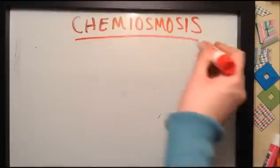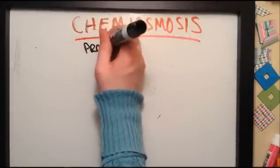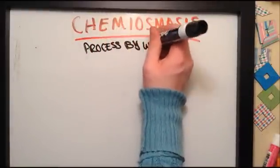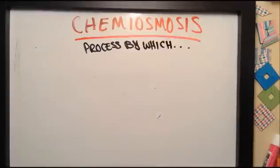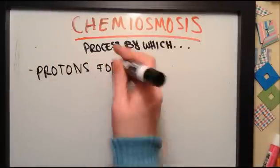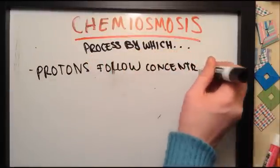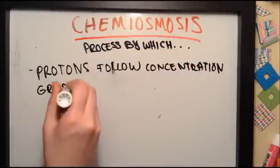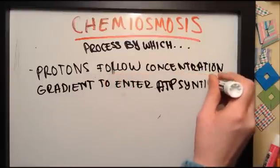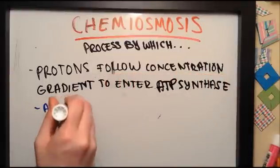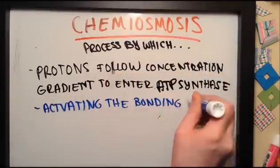Now, let's recap. Chemiosmosis. It's the process by which protons follow the concentration gradient to enter ATP synthase, where they activate the bonding of a phosphate and ADP, thus synthesizing ATP.